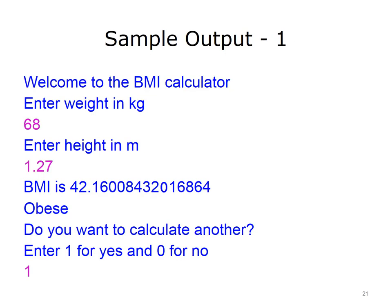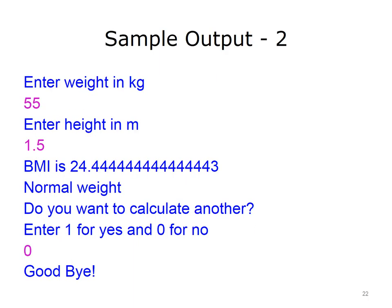Here is sample output from the program. The input entered by the user is given in purple. The user is welcomed to the BMI calculator and asked to enter weight in kilograms and height in meters. The BMI is calculated and printed — in this case, it is 42.16. The category for this BMI is obese. The user is then asked if he or she wants to calculate another; the user enters 1, meaning yes, and the loop repeats. The user enters a new weight and height; the BMI is calculated as 24.444, which has the category normal weight. Finally, the user enters 0, meaning no, the loop ends, and goodbye is printed to the screen.